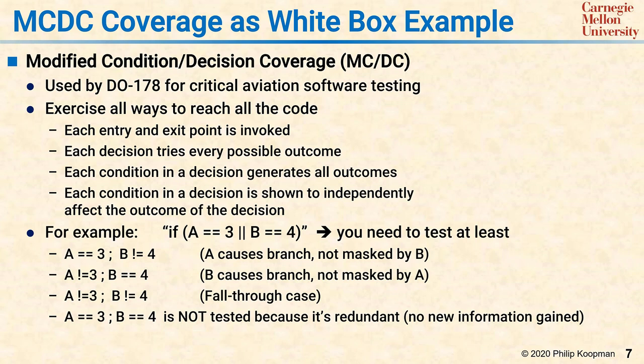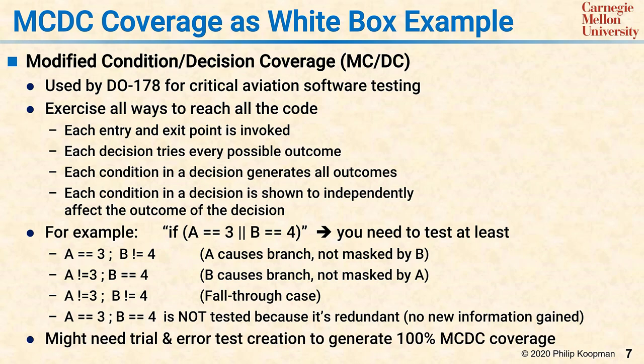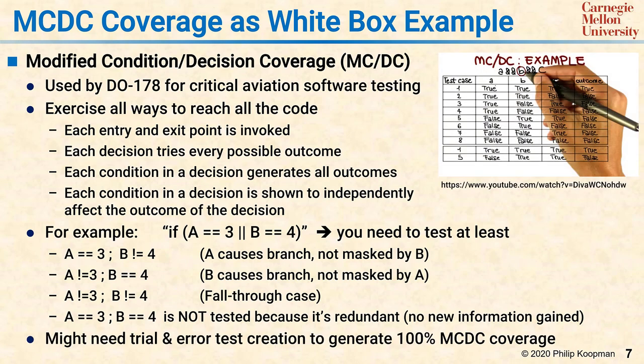For simple ands and ors, you generally need one more test than the number of terms in the condition clause — for two terms you need three tests, for five terms you need six tests, and so on. If you have more complicated expressions, there's a truth table technique that can help, and you may need trial and error to find all the different variations. The next item in the playlist is a video from another author which works a truth table example for MCDC coverage.